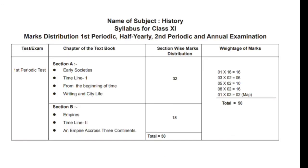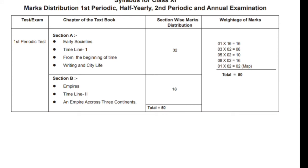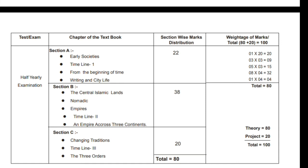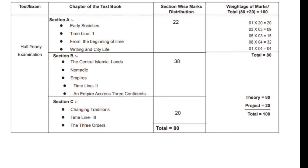First Periodic Test: Section 1 Early Societies From the Beginning of Time, Writing and City Life, Section V Across Three Continents. Time Line 1: From the Beginning of Time, Writing and City Life. Section V: Central Islamic Lands, Nomadic Empires, Time Line 2. An Empire Across Three Continents, Section 38, Section C Changing Tradition, Time Line 3, 3 Orders. Section Total: 80 Marks, 20 Marks Project, Total 100 Marks.